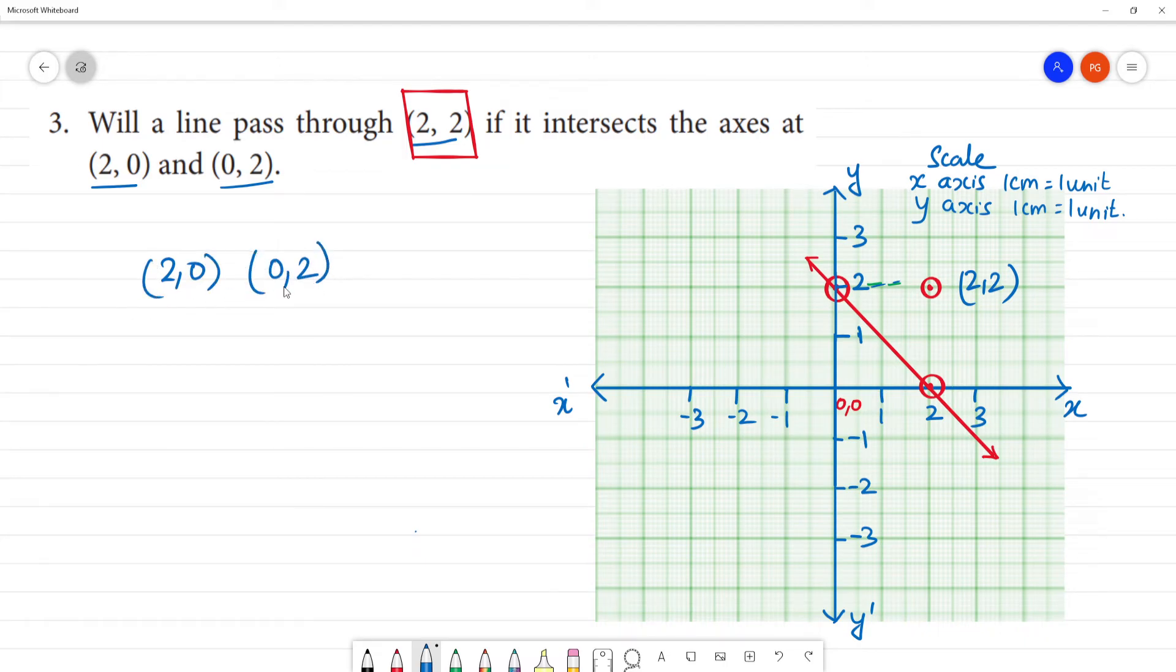A line drawn between (2,0) and (0,2) will not pass through (2,2).